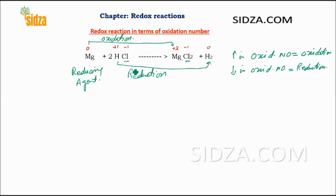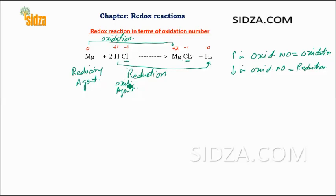The substance which undergoes reduction is an oxidizing agent. So here HCl acts as an oxidizing agent, because it is because of HCl that magnesium undergoes oxidation. Similarly, HCl undergoes reduction because of magnesium, so magnesium is called a reducing agent.